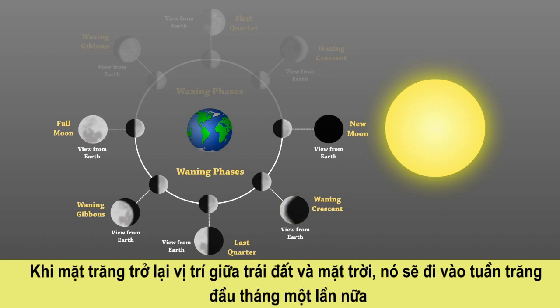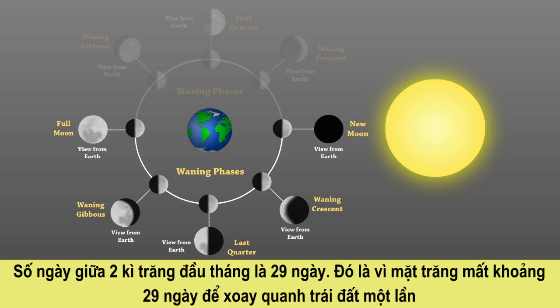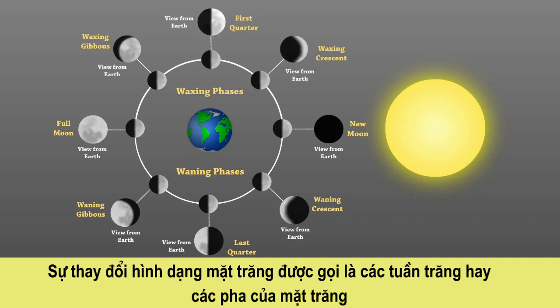When the moon comes back between the earth and the sun, it enters the new moon phase again. The number of days between two new moons is 29, as the moon takes approximately 29 days to revolve once around the earth. These changing shapes of the moon are called phases of the moon.